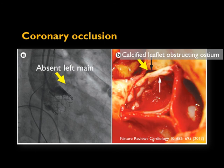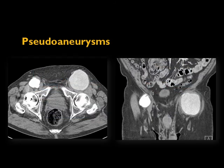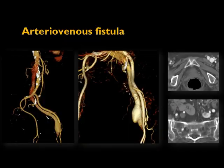Here's an example of coronary occlusion: intraoperatively after device placement, an injection above the valve shows no filling of the left main coronary artery or LAD — blocked by the valve. Post-mortem imaging shows the left main ostium and the valve edge covering it. Another example illustrates what happens when the sheath-to-femoral artery ratio is too large: the vessel is literally pulled out with the sheath, causing rupture requiring emergency vascular surgery. Pseudoaneurysms and AV fistulas are also complications that can occur with any vascular access.